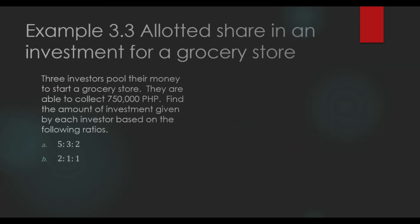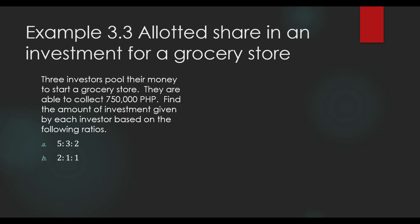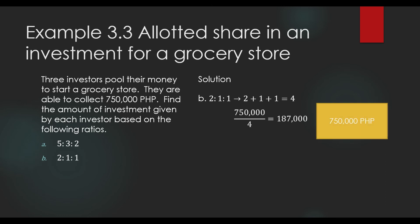Let us now go to letter B. What will be their contributions to the investment if their contributions took place according to the ratio 2 is to 1 is to 1? The sum of the terms is 4. We divide the whole, P750,000, by 4. The result is P187,500. So, we divide the total into 4 equal parts, and each part is worth P187,500.